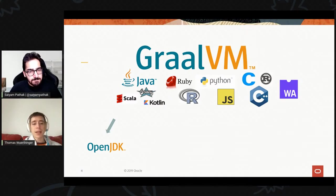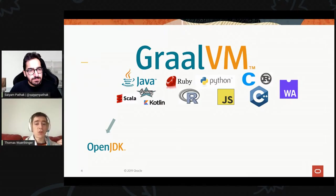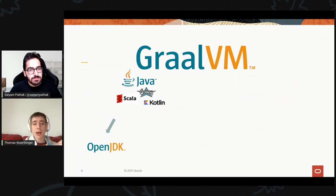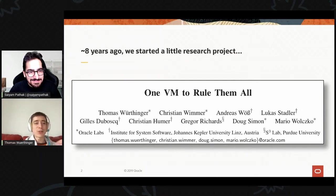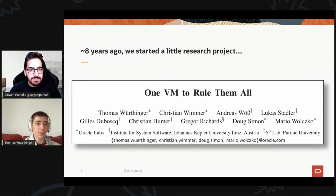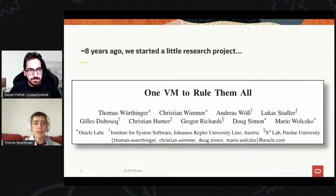The interesting question is: if this is just a Java program interpreting JavaScript or Python, why is it still relatively fast? You have only an interpreter, and even though Java is fast it's still only an interpreter for Python or Ruby. How do we make it fast? This is the biggest research contribution of GraalVM — the mechanism on how we make these interpreters fast.